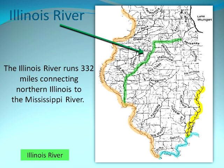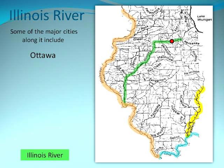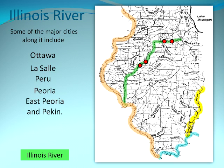The Illinois River runs 332 miles connecting northern Illinois to the Mississippi River. Some of the major cities along it include Ottawa, La Salle, Peru, Peoria, East Peoria, and Pekin.